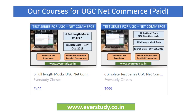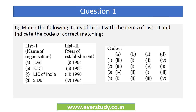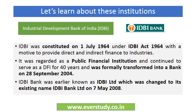Let's start with the first question: Match the following items of List 1 with items of List 2 and indicate the code of correct matching. We are given organizations — IDBI, ICICI, LIC of India, and SIDBI — and their years of establishment not in the correct order. Rather than just marking the right answer, we will cover these institutions in a broader conceptual framework.